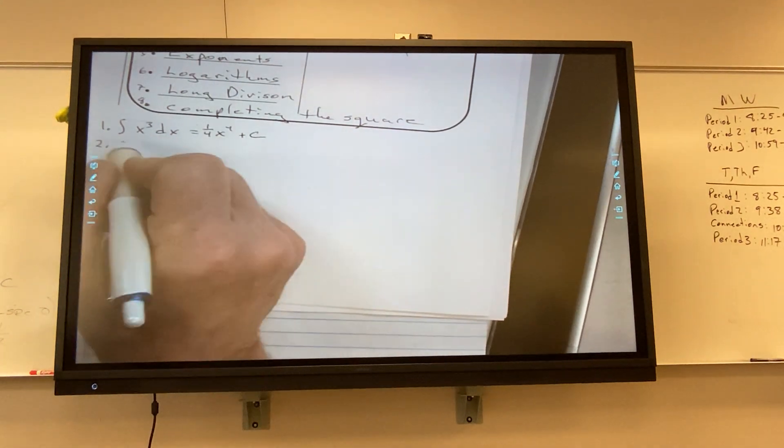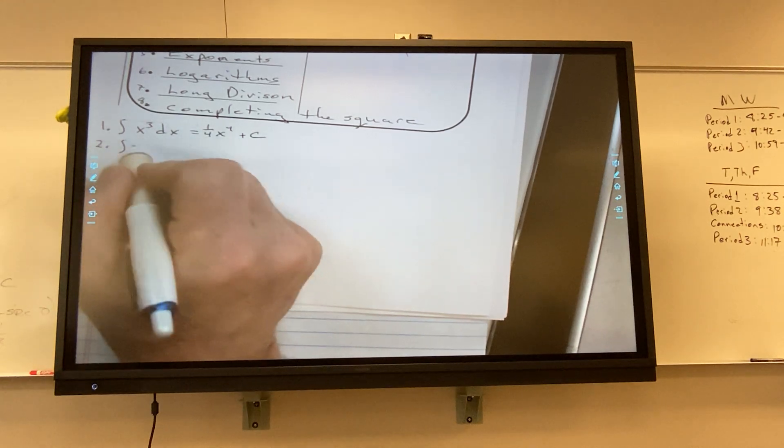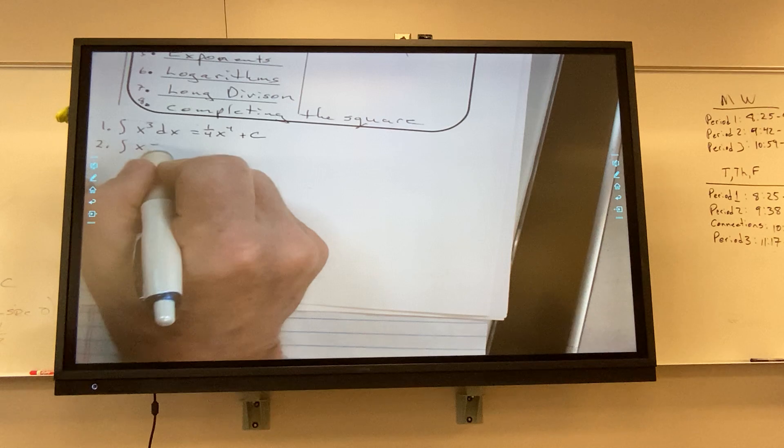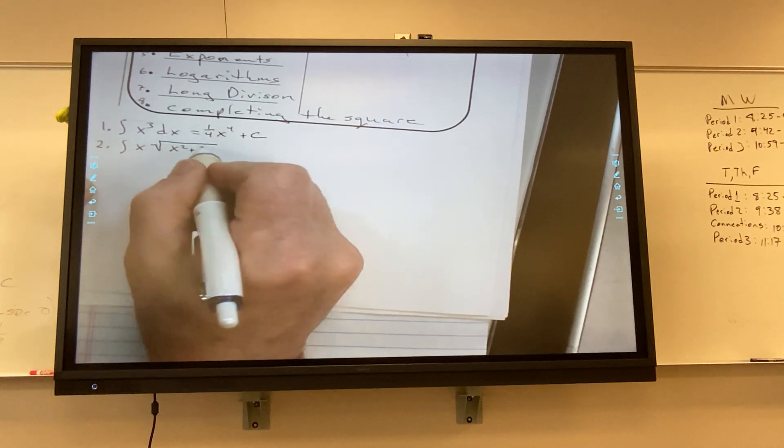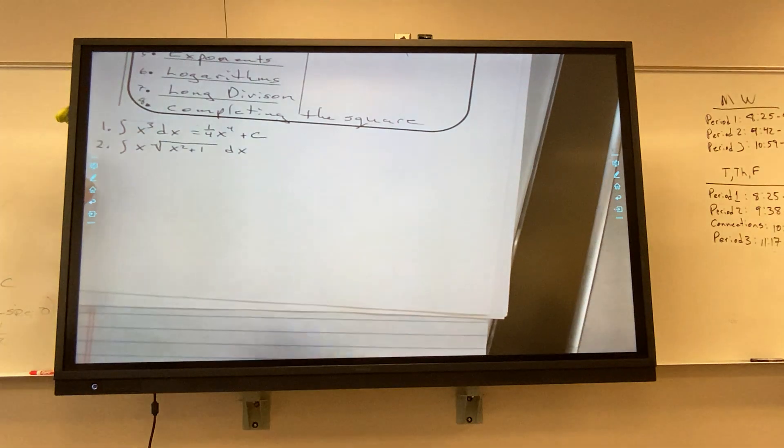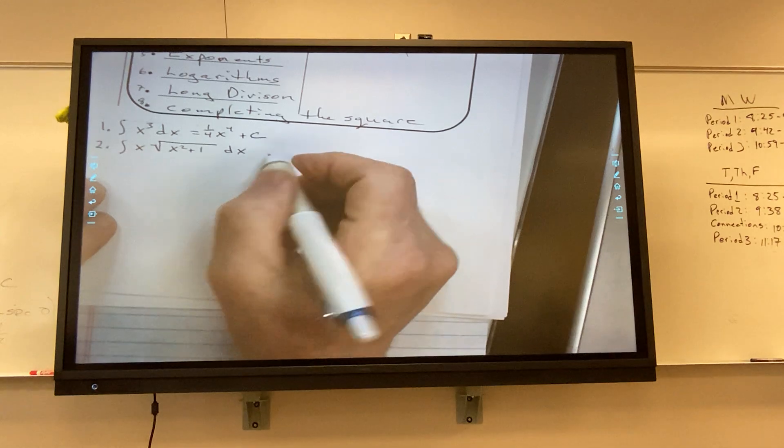U substitution. Tyler, what would you do here? I'd say U is equal to x squared plus one. Okay.